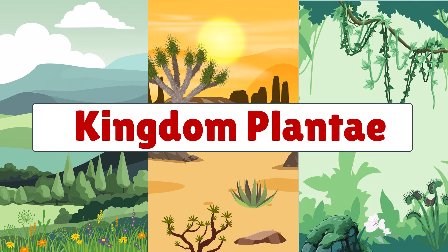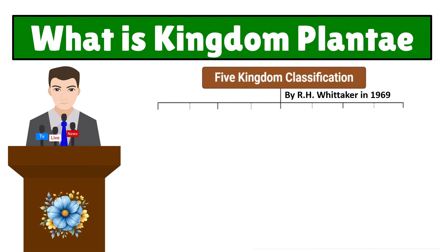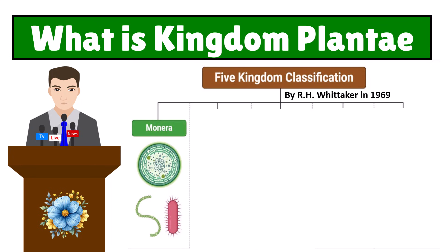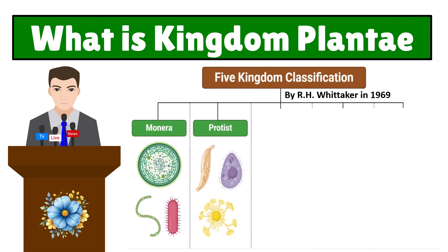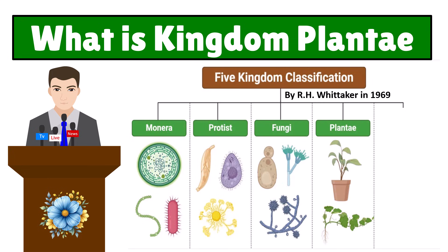In this video I will discuss the Kingdom Plantae. R.H. Whittaker in 1969 gave the five kingdom classification of organisms. This classification includes five kingdoms: Monera, which includes bacteria; Protists, which include single-celled organisms; Fungi, which includes yeast and fungus; Plantae; and Animalia.